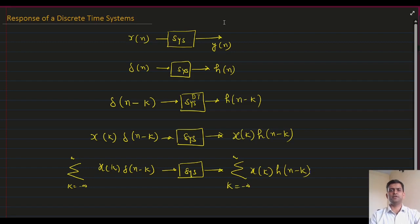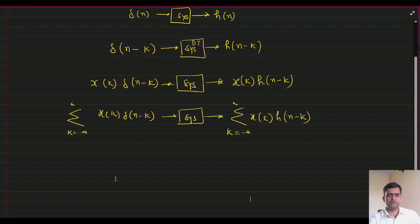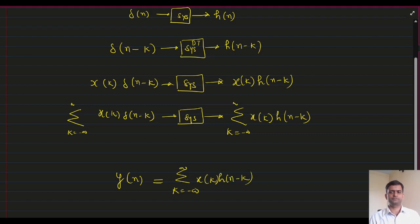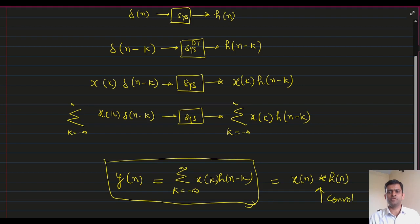The convolution sum is important for calculating the output of discrete time systems. So, the output of the discrete time system for input X(K) is given as: Y(N) = summation from K equal to minus infinity to infinity of X(K) · H(N minus K). This is also represented by X(N) star H(N), where the star denotes the convolution operation.